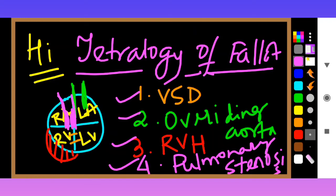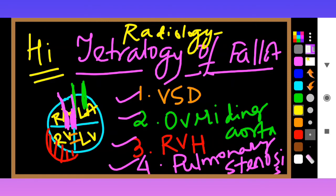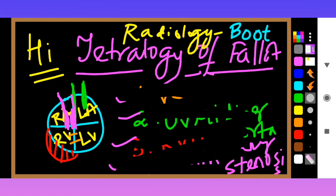Tetralogy of Fallot is very, very important for your PGDNB and next examination. Another important thing is the radiology of Tetralogy of Fallot — when you look at it, it is a boot-shaped heart. Always remember the radiology. Let me erase and show you what the boot-shaped heart looks like.